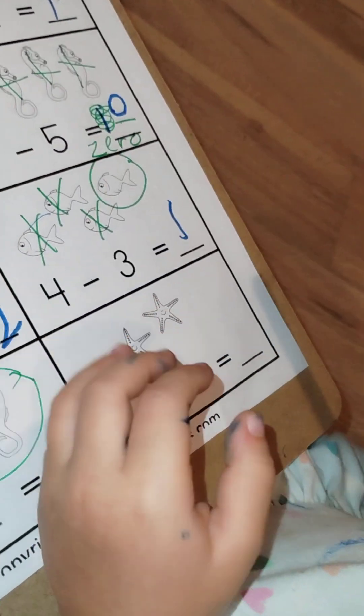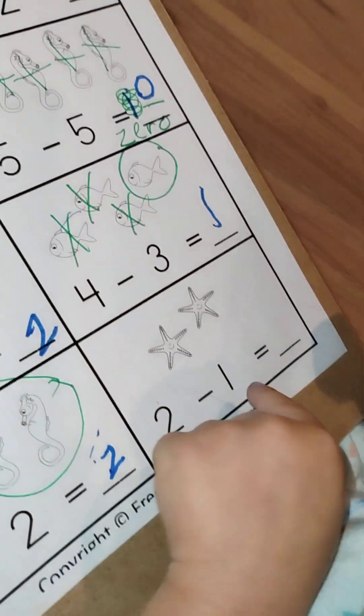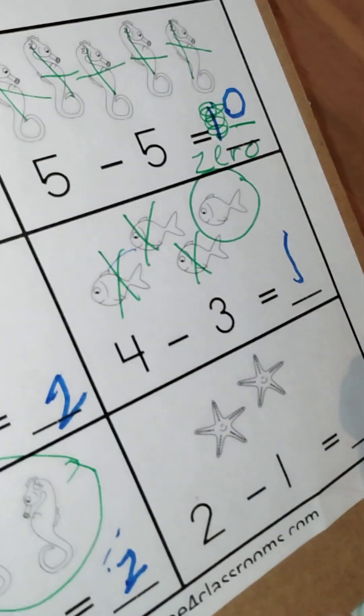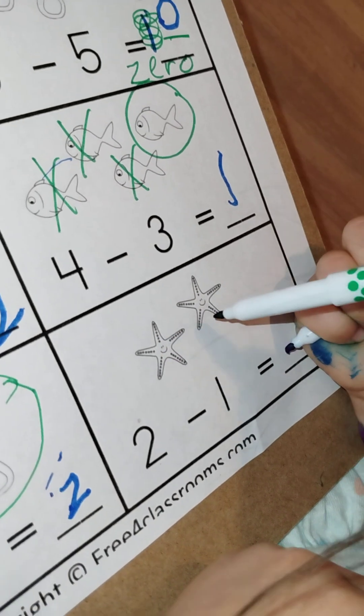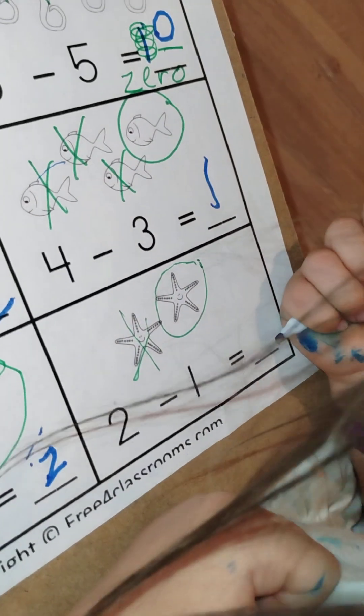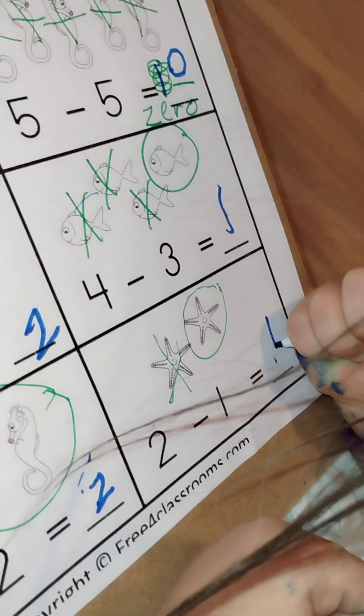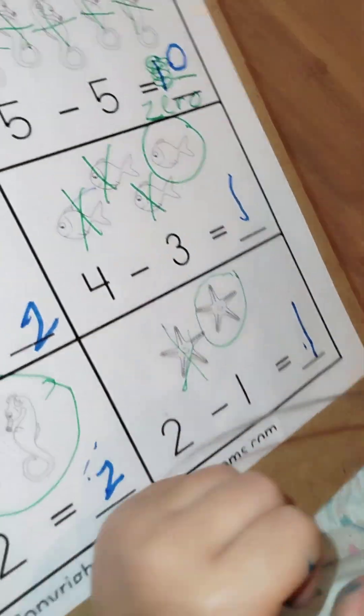I can't see because of your hair. What does that say? Two minus one equals what number? So if you have two and you take away one, how many is left? One. Write the number one. Good job!